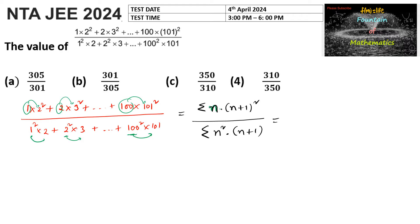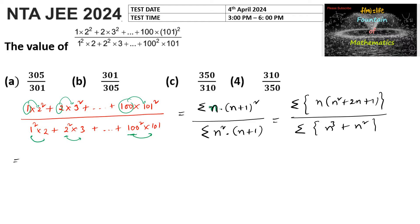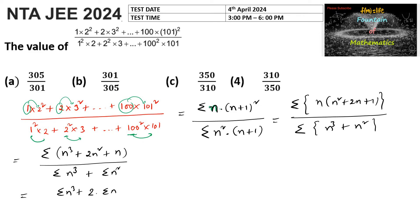If we expand this, the numerator becomes summation of n·(n² + 2n + 1), which gives summation of n³ + 2·summation of n² + summation of n, divided by summation of n³ + summation of n².